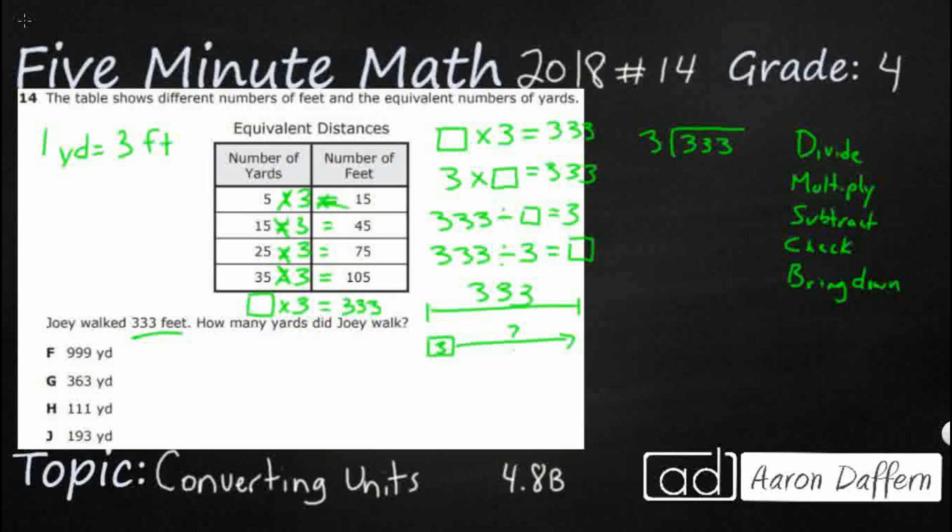So divide. Start with the first number. Does 3 go into 3? Yes. One time. Multiply. 1 times 3 is 3. Subtract. 3 minus 3 is 0. Check. Is that difference smaller than your divisor? It must be. Yes. So just bring down that next one. Do it all over again.